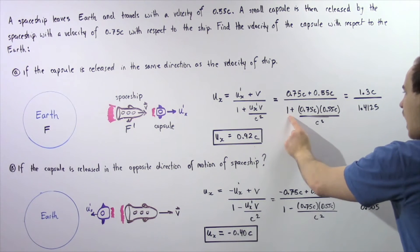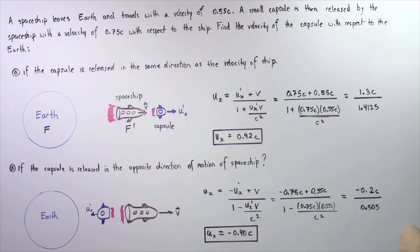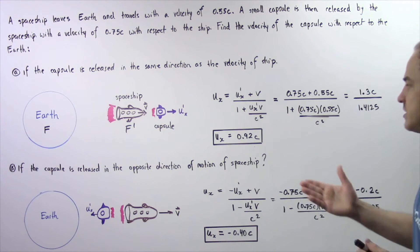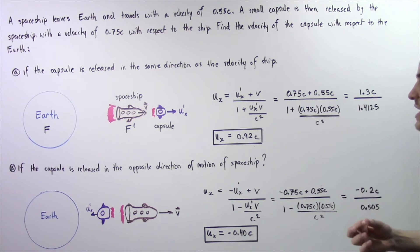We divide that by 1 plus 0.75C multiplied by 0.55C divided by C squared gives us 1.4125. If we divide these two values, we get approximately U_x is equal to 0.92C.